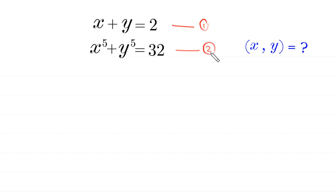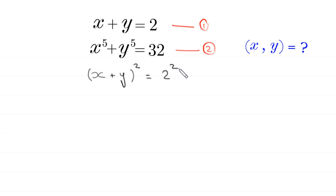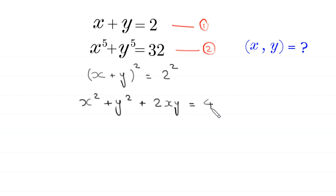Now we take the square of both sides of equation 1. Equation 1 is x plus y equals 2, so squaring both sides gives x squared plus y squared plus 2xy equals 4. Moving 2xy to the right hand side gives x squared plus y squared equals 4 minus 2xy. Let's call this equation 3.